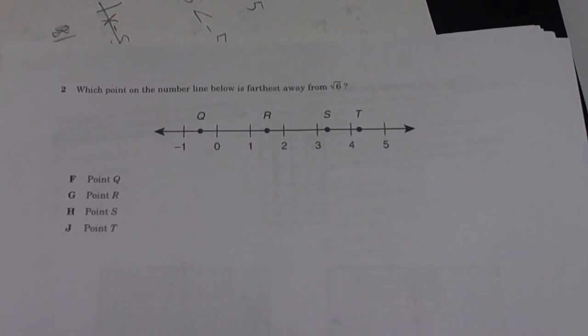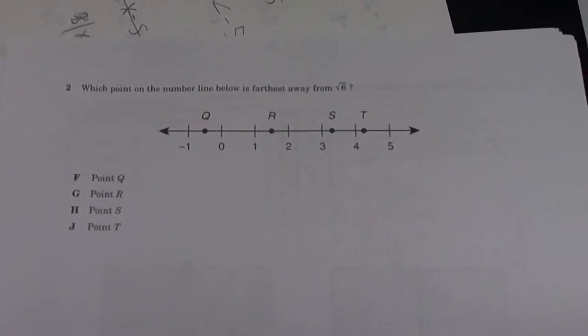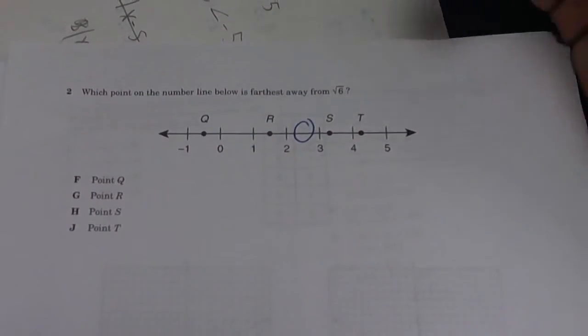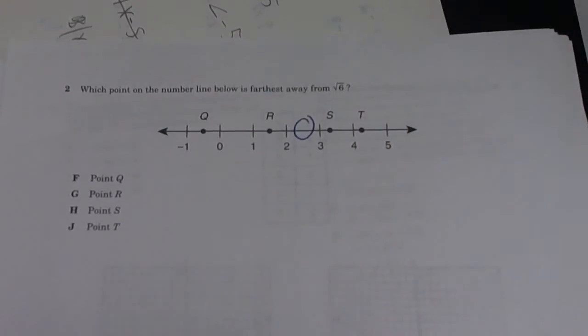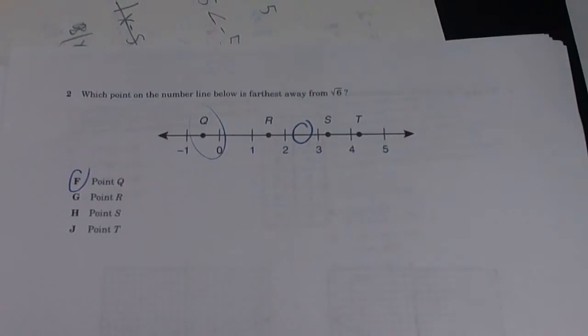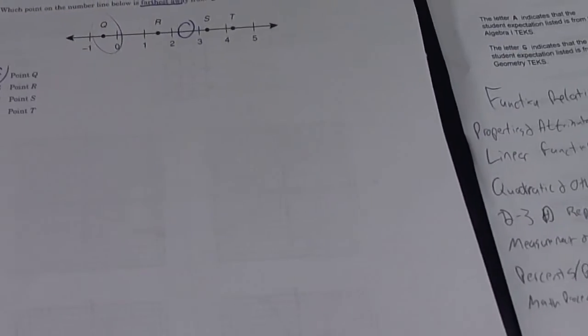Number 2 says, which point on the number line below is farthest from the square root of 6? So you plug in your calculator, square root of 6, you know it's going to be between here somewhere. So which one's further away? Well, this is pretty obvious. Q, which is F. So you've got to know what square root of 6 is. You just use your calculator and furthest away. So that one's pretty easy.